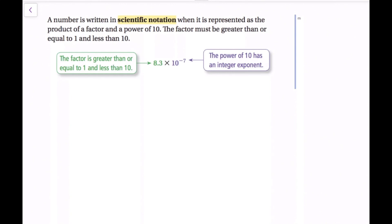In this lesson, we're going to talk all about scientific notation. A number is written in scientific notation when it is represented as the product of a factor and a power of 10. The factor must be greater than or equal to 1 and less than 10. All that means is we are just going to rewrite any number as a number between 1 and 10 — it can be 1, it cannot be 10 — and then times 10 to any power. Another way to think of this: the factor has to be a one-digit number before the decimal. So 8.3 would work, 2.7 would work, 1.0 would work, but 10 or 11.3 would not work because those are not less than 10.